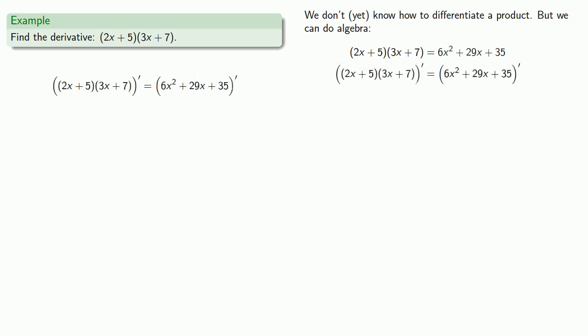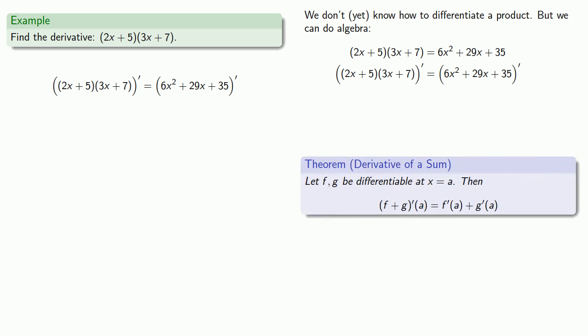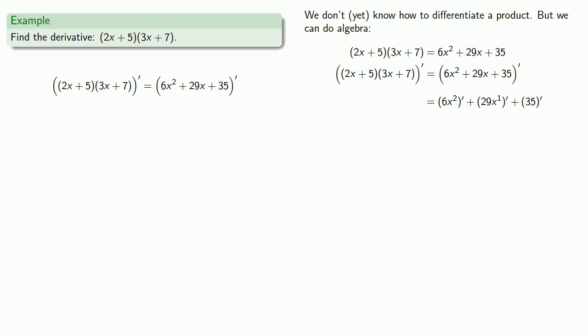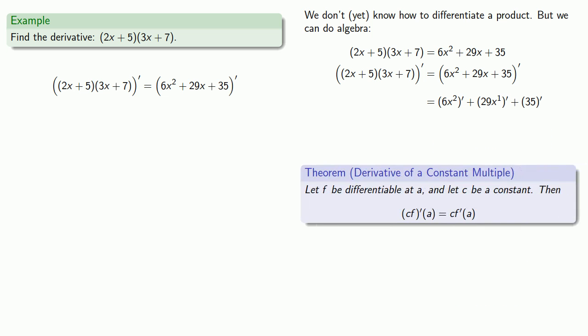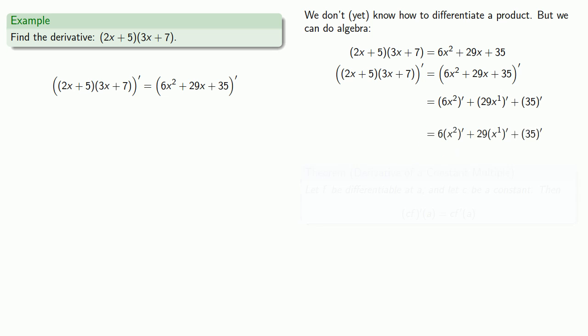So when we differentiate, we're differentiating a sum. So this becomes the derivative of 6x squared plus the derivative of 29x to the first plus the derivative of 35. Now these two, 6x squared and 29x to the first, are constant multiples of a function. So that constant multiplier, 6 or 29, can be moved outside. And now we have the derivative of x to the second, the derivative of x to the first, and the derivative of a constant. And we know how to differentiate those things. And we end up with our final answer.